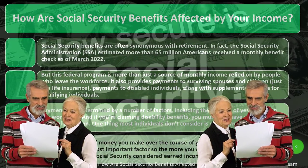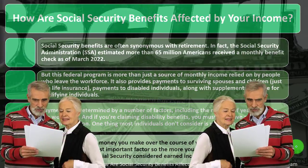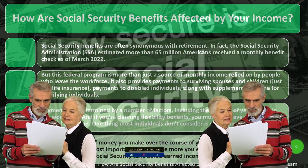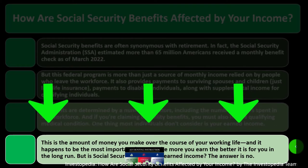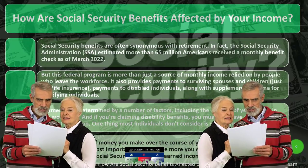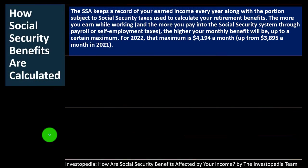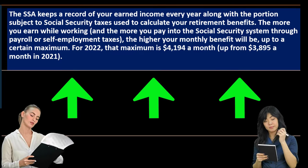The amount of money you make over your working life is the most important factor — the more you earn, the better it is for you in the long run. Is Social Security considered earned income? No. When you receive Social Security benefits, that is not considered earned income — a term used in taxes for income actively earned by working or being self-employed. The benefit, if you're receiving Social Security, typically isn't considered earned income, although it may still be subject to taxation.